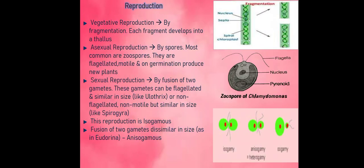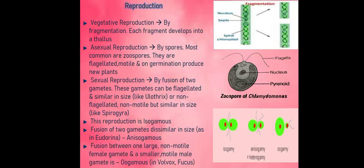Fusion of two gametes dissimilar in size like happens in Eudorina is known as anisogamous. And fusion between one large non-motile female gamete and a smaller motile male gamete is oogamous, like seen in Volvox and Fucus.